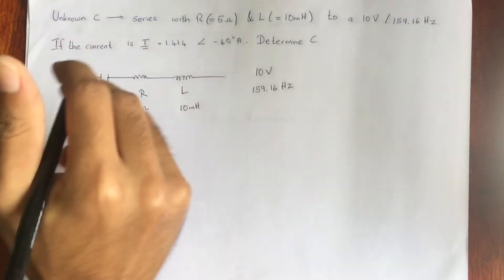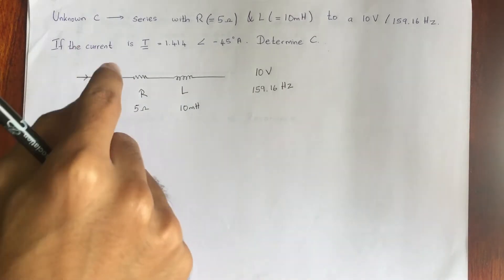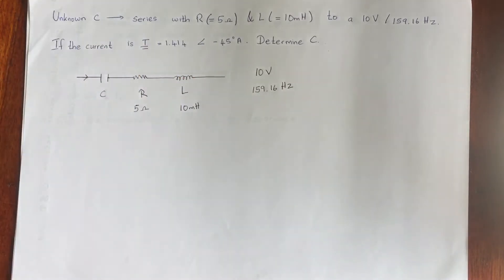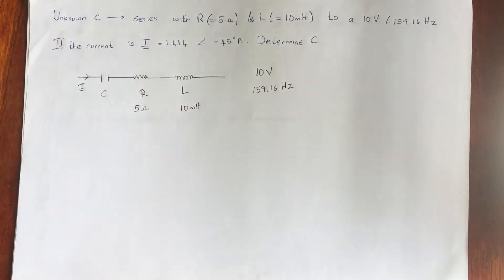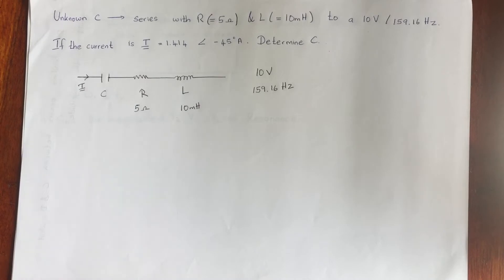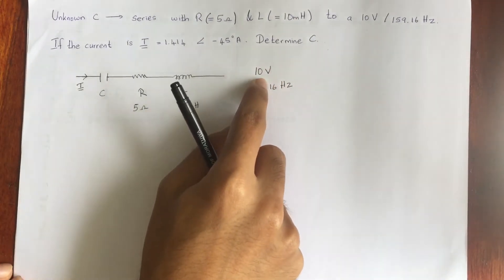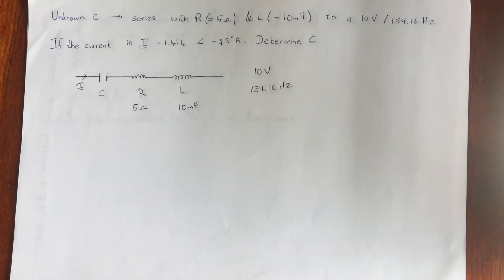Since the components are connected in series, each element gets the same current. The current is given in polar form: 1.414 at an angle of minus 45 degrees. We need to determine the capacitance of the capacitor. Even if you are unsure how to proceed, just use what you know — we have the voltage and the current, so we can find the total impedance from those two values.